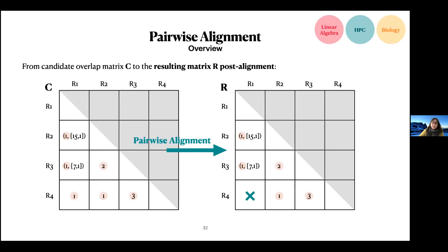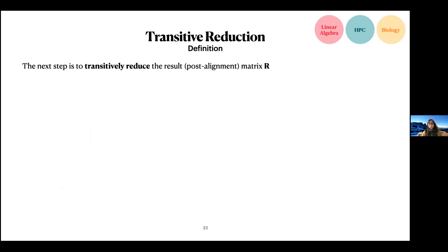The next step is pairwise alignment. You can think of this as an element-wise operation on the candidate matrix C. We align the two sequences, and if the alignment score is smaller than the value expected based on the overlap estimated from k-mer positions, we remove that entry. This prunes spurious or low-quality matches. Once we have the resulting matrix R, we are ready to look at the overall graph structure and clean the graph.